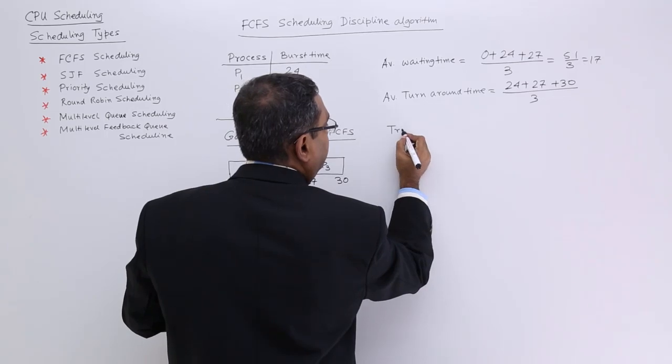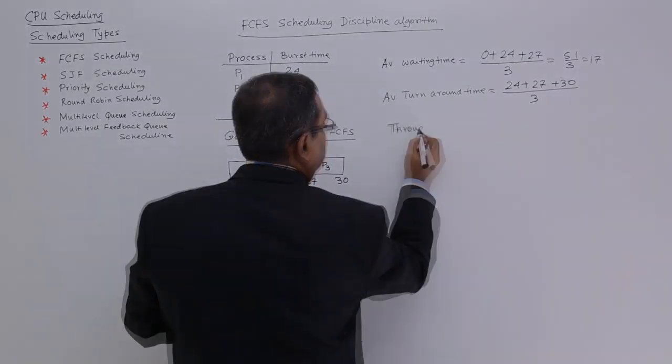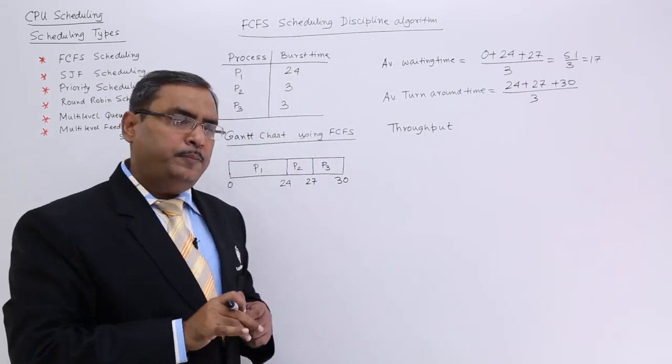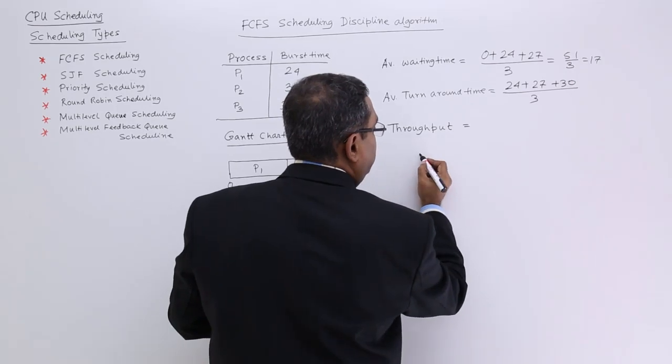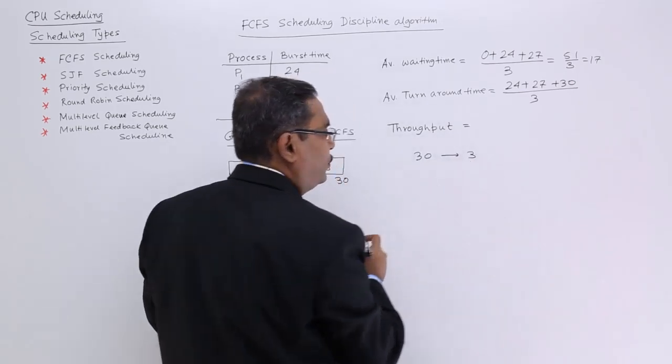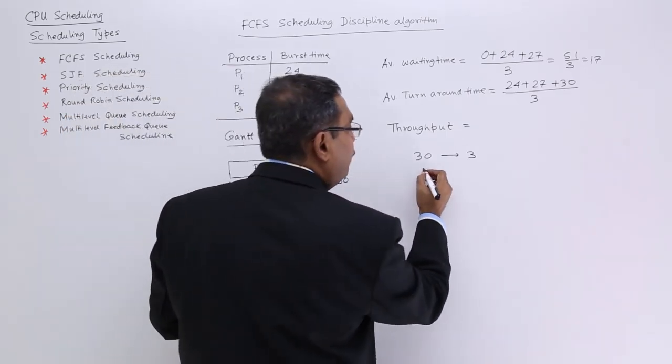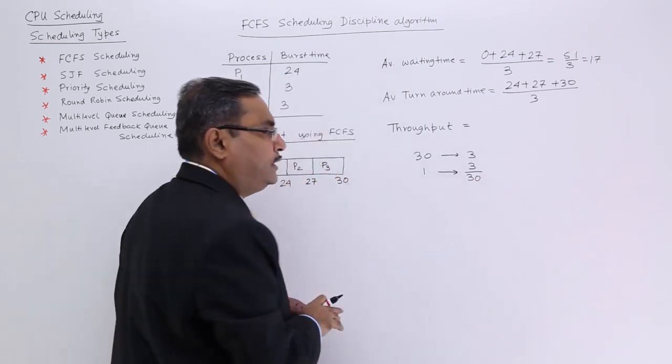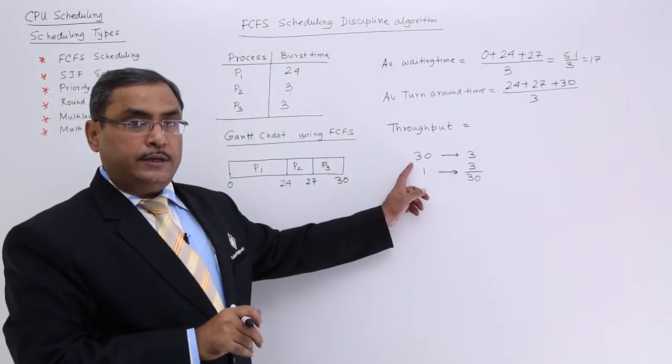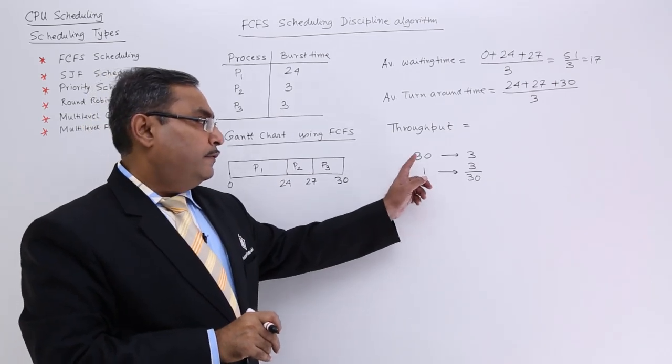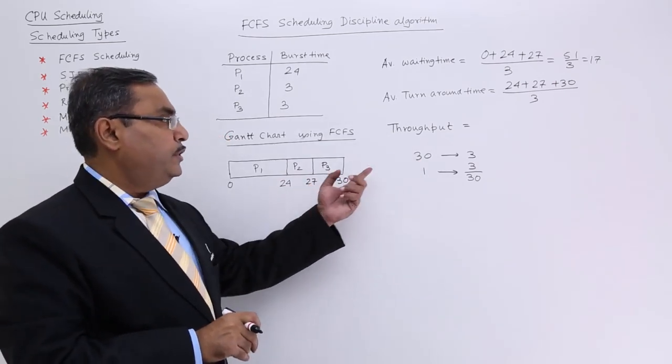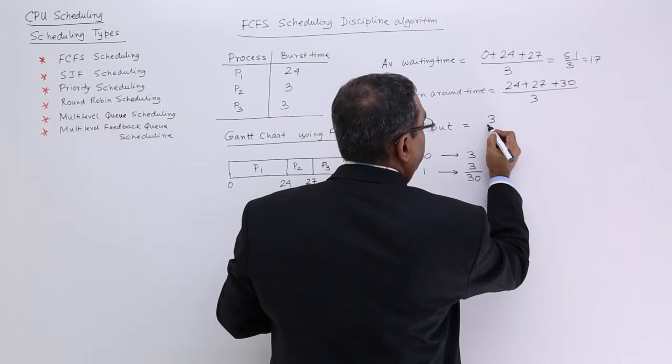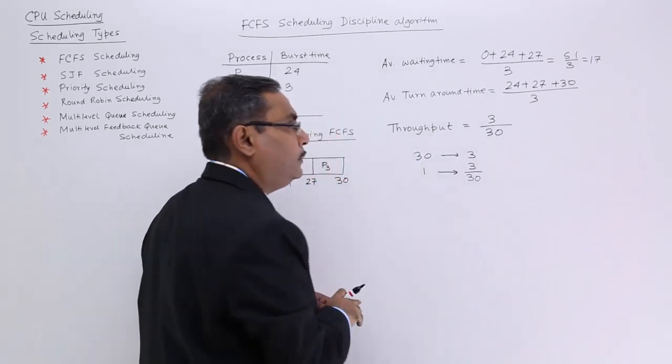Now, if you calculate the throughput, throughput means number of processes completed per unit time. In 30 units I have completed 3 processes, so for 1 unit time, the throughput is 3 divided by 30.